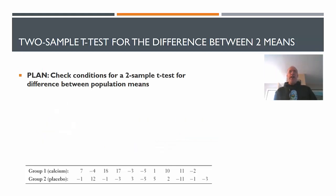Here's our plan. We're going to check the conditions for two-sample t-tests for difference between population means. You're going to notice, just like we've talked about before, very similar conditions. We're just swapping out parts now.